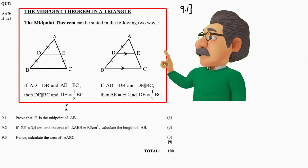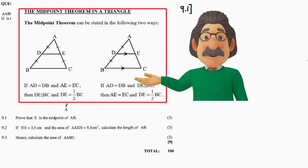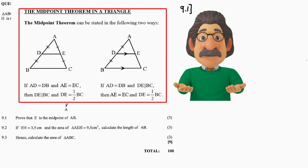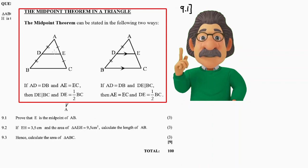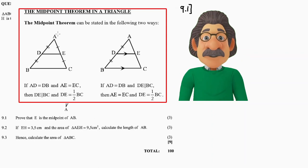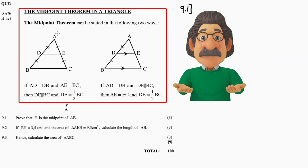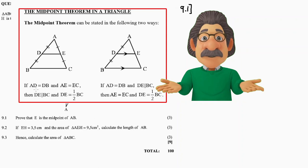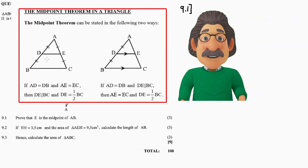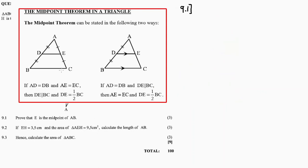The midpoint theorem can be stated in the following two ways. In triangle ABC, the first scenario: if AD equals DP and AE equals EC — this equal to that, this equal to that — then the conclusion is that DE is parallel to BC and DE is equal to half of BC.